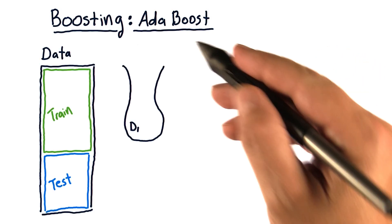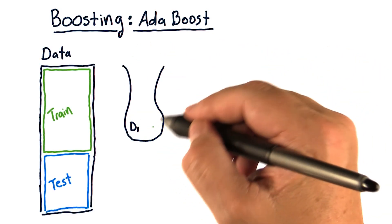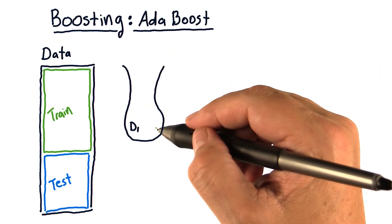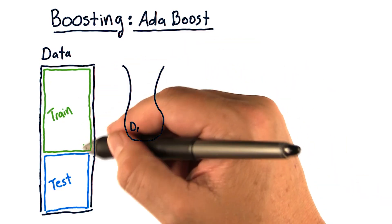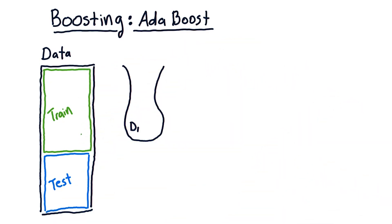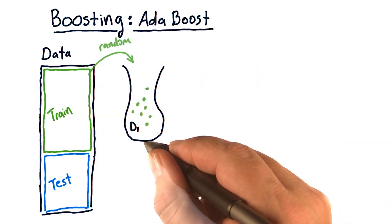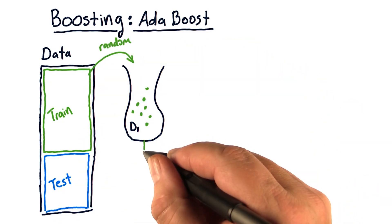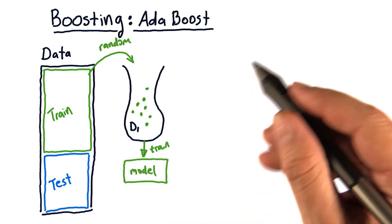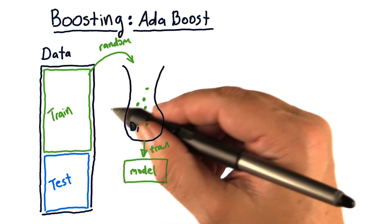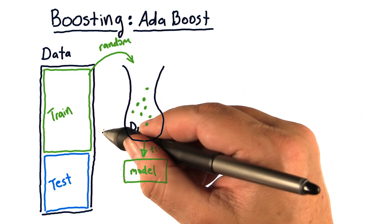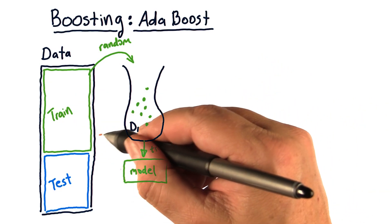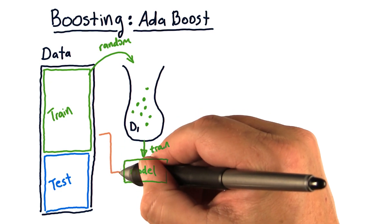Here's how AdaBoost works. We build our first bag of data in the usual way — we select randomly from our training data. We then train a model in the usual way. The next thing we do, and this is something different, we take all of our training data and use it to test the model.